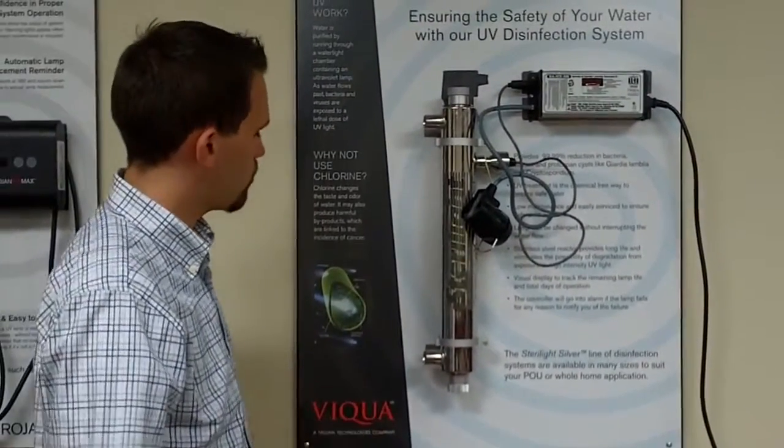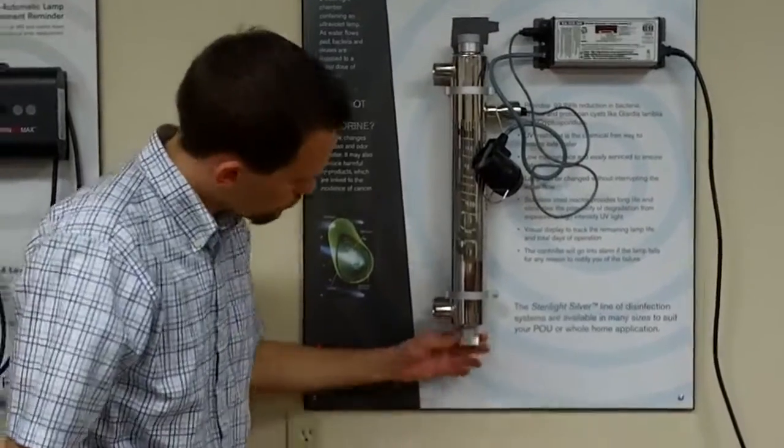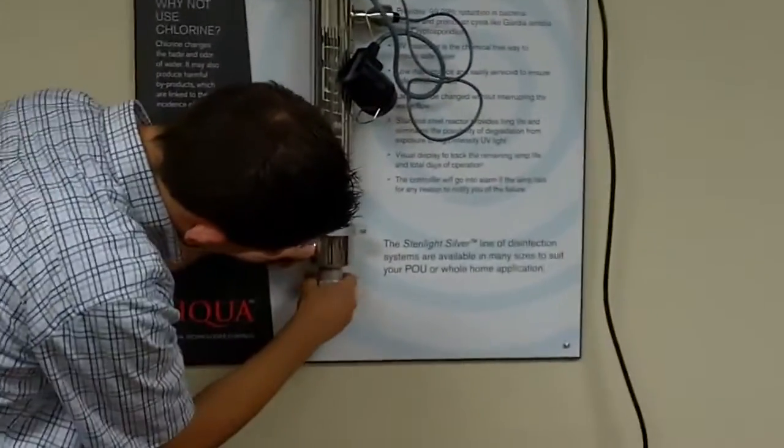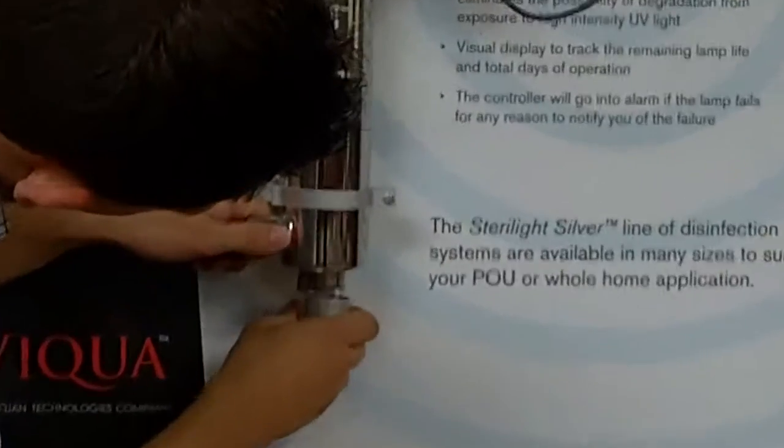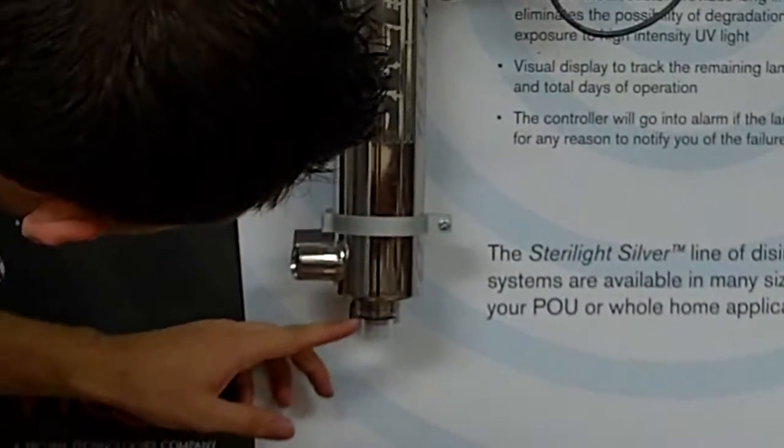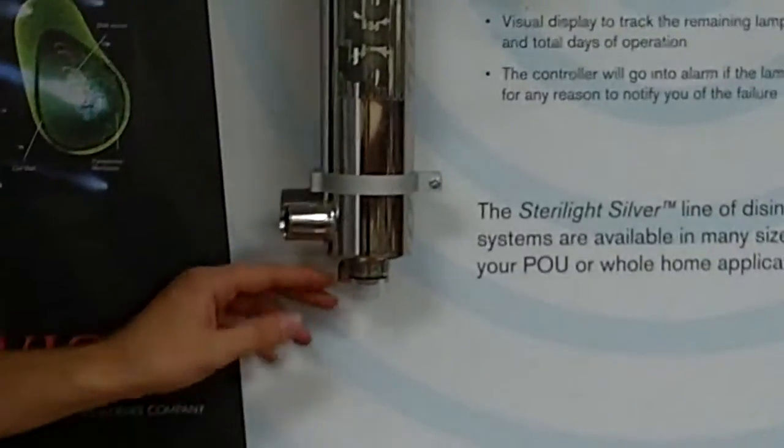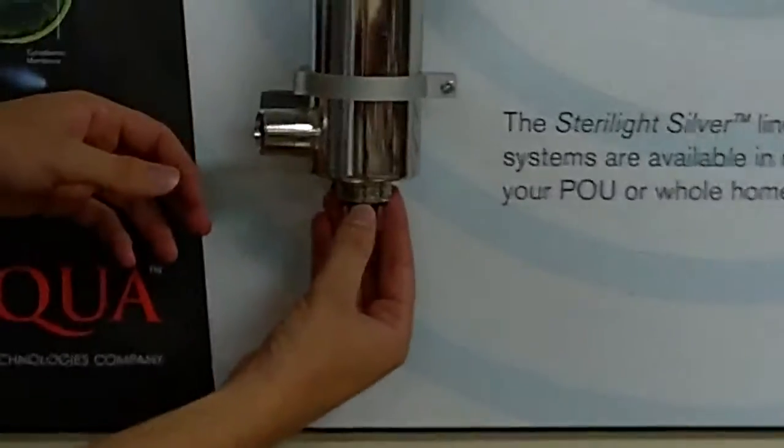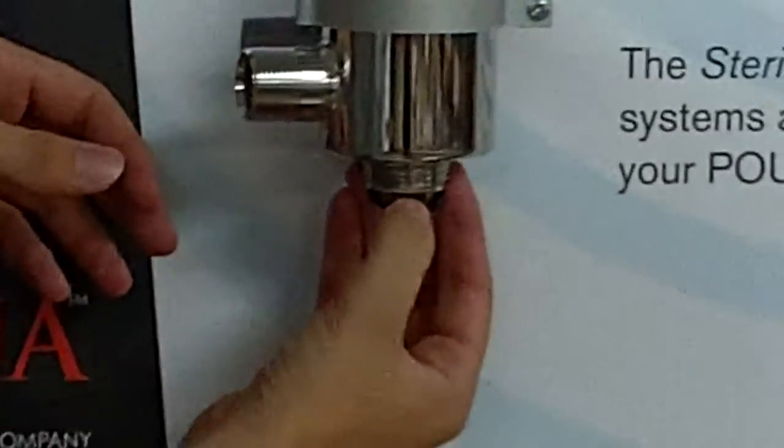The first thing you want to do when you're removing the sleeve is to loosen this bolt off the bottom here. And then you'll see there's a black o-ring there. We just want to take that o-ring off so that we can actually get the sleeve out. It just slides right down like so.